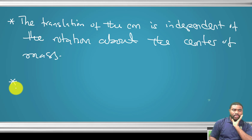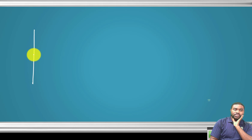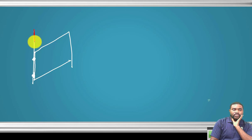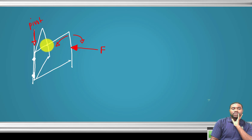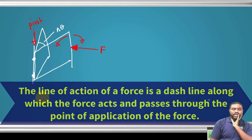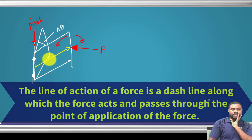If we have a door with a hinge representing our pivot, and we apply a force F on that door, the door will rotate either clockwise or counter-clockwise. The angle swept is delta theta. The distance from the pivot to the point where the force is applied — let's call it L — is called the lever arm. The lever arm is equal to the perpendicular distance from the line of action of the force to the pivot.